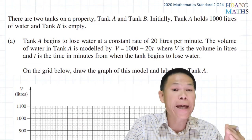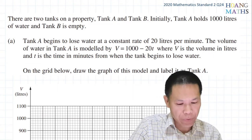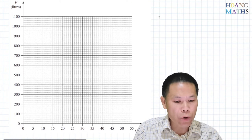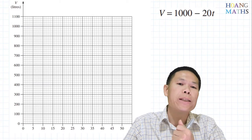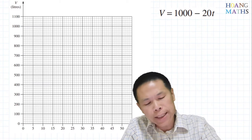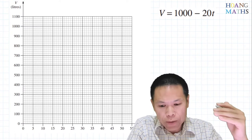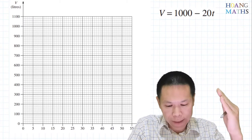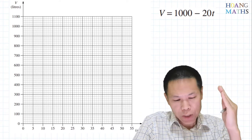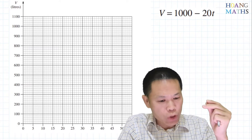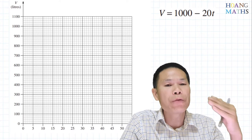On the grid below, draw the graph of this model and label it as Tank A. So we need to draw the graph for Tank A. The model is V = 1000 − 20t. The vertical axis is the volume going up by 100 liters, and the horizontal axis is going up by five minutes each major grid. The easiest way is to substitute t = 0, 5, 10, 15, and so on — we just need a few points.